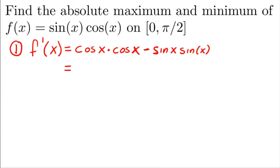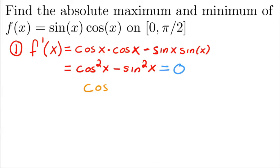The derivative equals cos²(x) - sin²(x), and we set it equal to zero. You might notice that cos²(x) - sin²(x) equals cos(2x) by the double angle identity, so we can solve cos(2x) = 0.